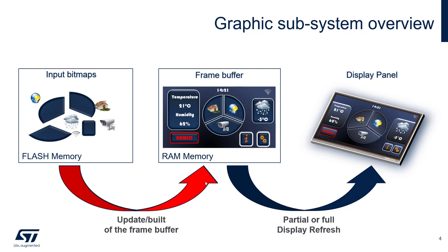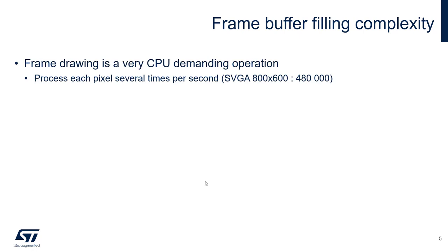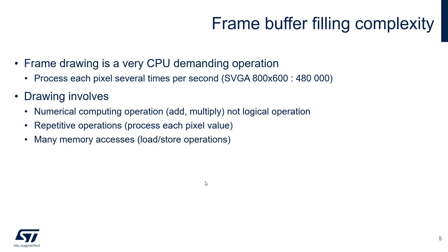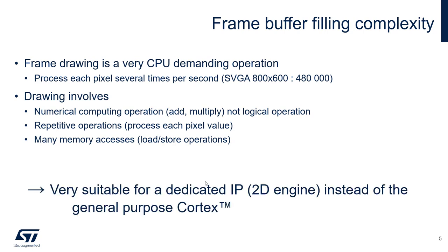We will focus in this first section on the graphics enabler that allows accelerating the update of the frame buffer. Frame drawing is a very CPU-demanding operation. It requires processing each and every pixel of the frame buffer several times per second — 60 times per second. For SVGA definition, that means 480,000 pixels must be processed several times per second. The drawing involves mainly numerical computing operations: addition and multiplication, no logical operations, and these are very repetitive since they must be done on each pixel. It also requires many memory accesses, reading from input bitmaps and writing to the frame buffer.